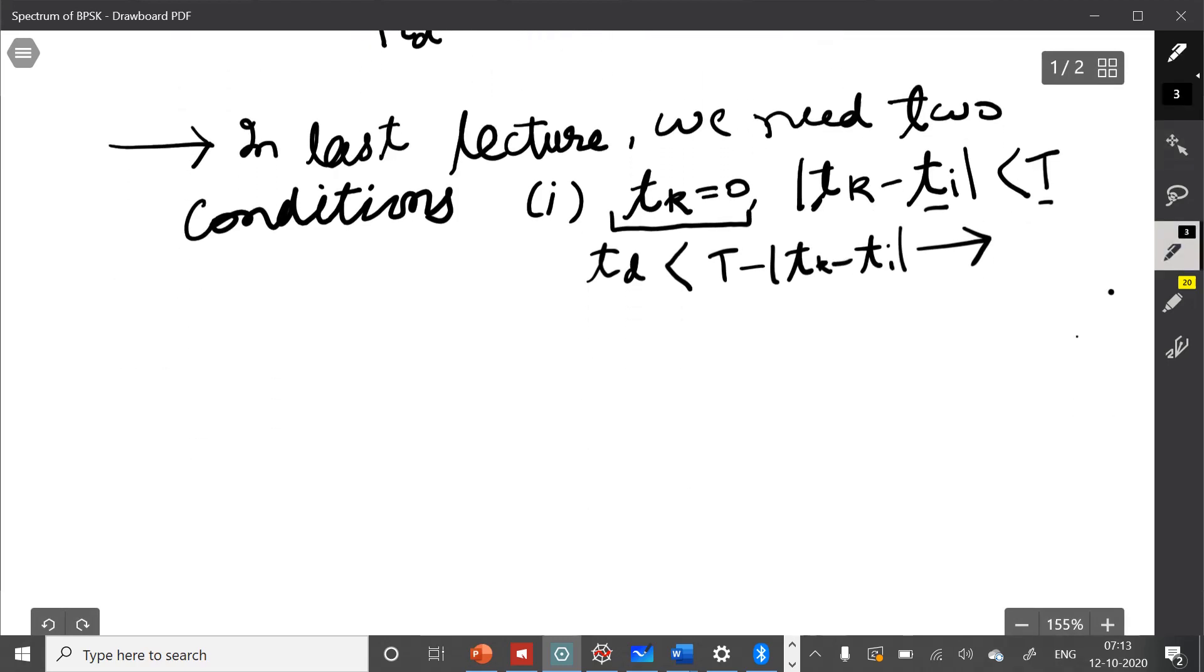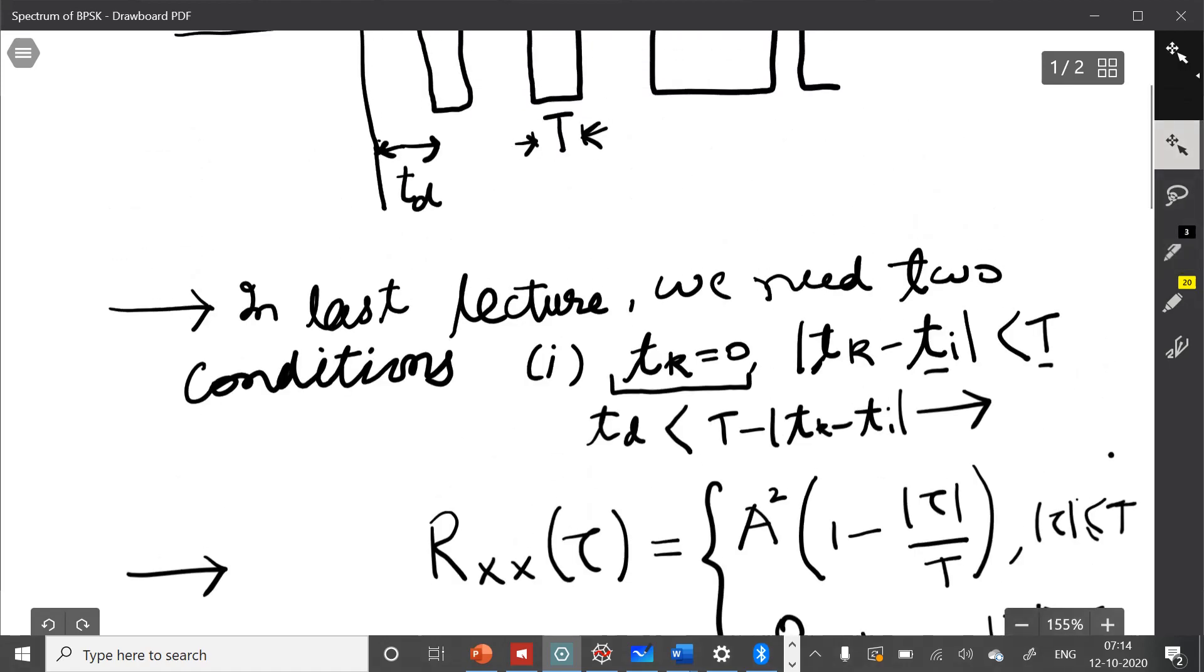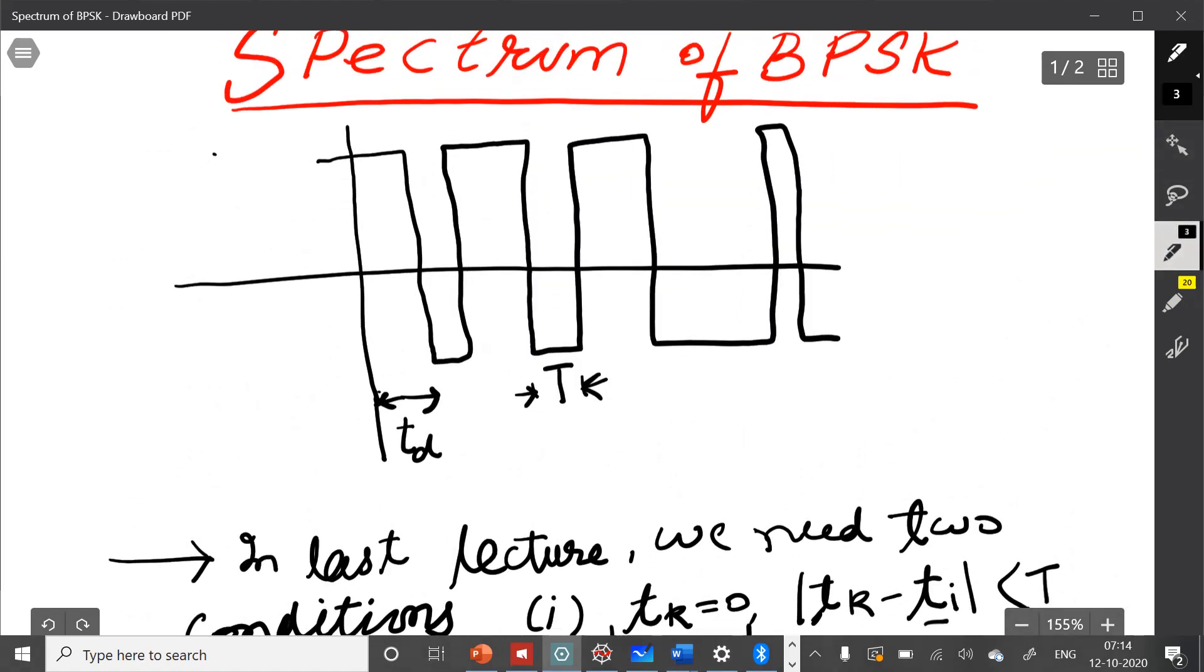I will take this discussion in doubt class. But even if you have not understood that part, just take that its autocorrelation function as a function of tau, where tau is difference between the two samples you are choosing, is A square times 1 minus tau divided by T for those values of tau which is less than or equal to T, and 0 for tau greater than or equal to T. This amplitude is A and minus A, T is the pulse duration.